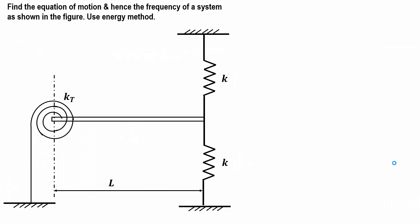Let us see another example. We have to find out the equation of motion and hence the frequency of the system as shown in the figure, and we have to use the energy method. We are having two linear springs and a rod, and at the end of the rod we are having a torsional spring whose stiffness is kt. The linear springs have stiffness k, and the distance between the pivot point and the spring attachment point is l.